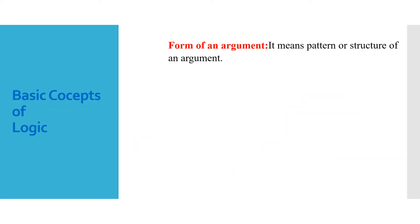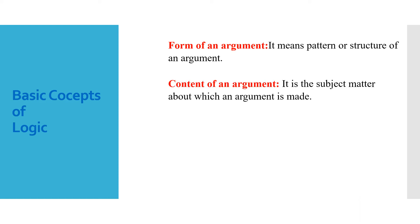Now we go to the form of an argument — it means the pattern or structure of an argument, the way in which you are presenting the argument. The content means the subject matter about which an argument is made — what you are talking about, what you are arguing about.